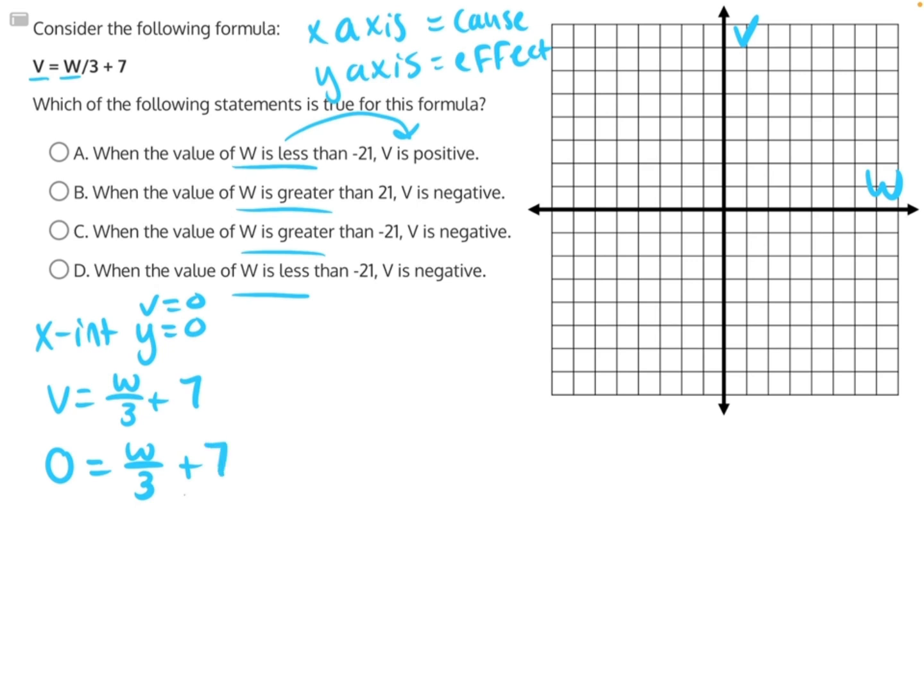Let's do opposite operations. Subtract 7 from both sides. This will cancel, giving us negative 7 equals w over 3. w is being divided by 3, so the opposite operation would be multiplication to both sides. These 3s will cancel, leaving us with 3 times negative 7, which is negative 21. So our first coordinate point is going to be negative 21 comma 0.